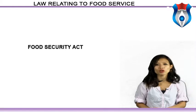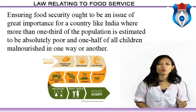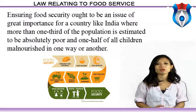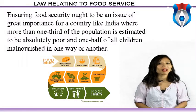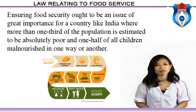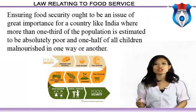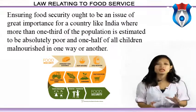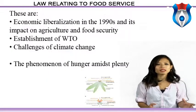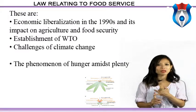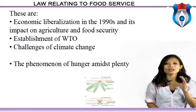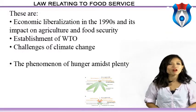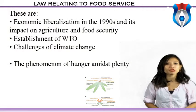Ensuring food security ought to be an issue of great importance for a country like India, where more than one-third of the population is estimated to be absolutely poor and one half of all children are malnourished in one way or another. There have been many emerging issues in the context of food security in India in the last two decades, including economic liberalization in the 1990s and its impact on agriculture and food security, and the establishment of the WTO, particularly the Agreement on Agriculture.